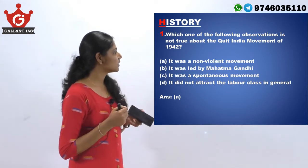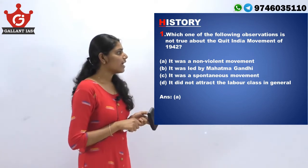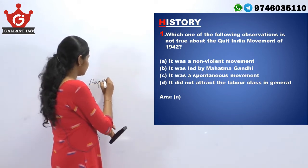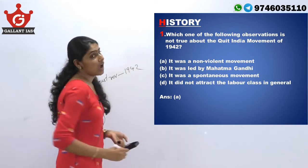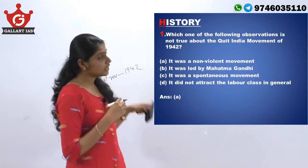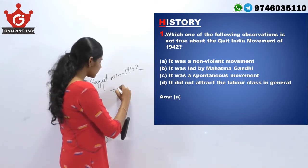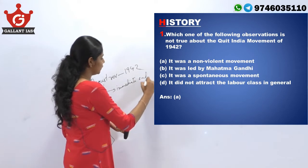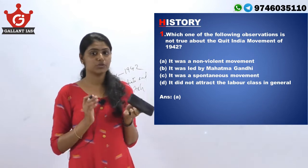Which one of the following observations is not true about the Quit India movement of 1942? The Quit India movement, also known as August Revolution, was launched after the failure of the Cripps Mission of April 1942. Its demand was the immediate end of British rule in India.